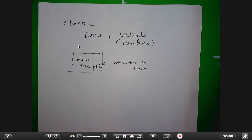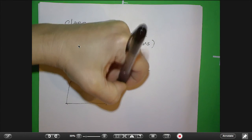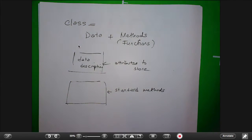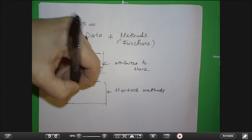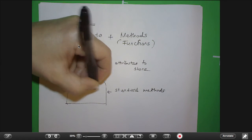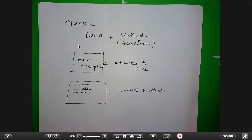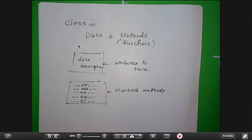Then you think about what are some very basic things you would like to do. A lot of classes have standard methods. The standard methods have to do with printing objects — you have str, which allows you to print. You have add, which allows you to add two objects. You have subtract. You also have operations that allow you to compare two objects, things like equal and less than.